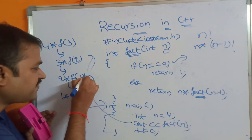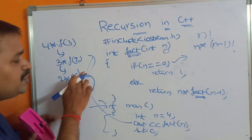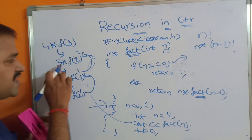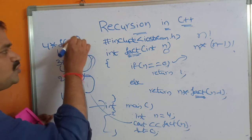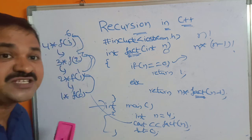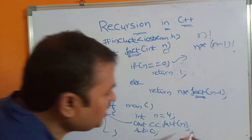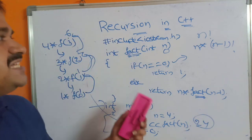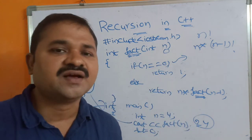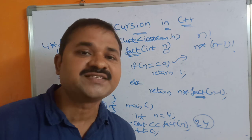So 1 is returned. Now 1 * 1 = 1, this 1 is returned to its previous function call. 2 * 1 = 2, this 2 is returned to its previous function call. 3 * 2 = 6, this 6 is returned to its previous function call. 4 * 6 = 24, and this 24 is printed. So this is about recursion, and in this way we can calculate the factorial of a given number with the help of recursion in C++.